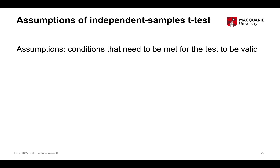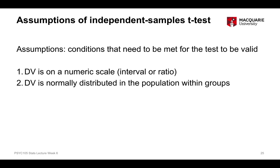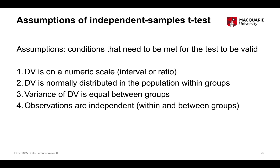There are always assumptions that go along with every test — certain conditions that need to be met for the test to be appropriate. There are four assumptions for an independent samples t-test. First, the dependent variable must be on a numeric scale. Second, the dependent variable is normally distributed in the population within each of the two groups. Third, there is approximately equal variation or spread of scores between the two groups. Fourth, observations are independent — all data points come from separate people, both within each group and between the two groups.